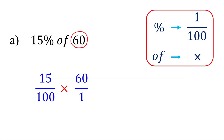60 is the same thing as 60 over 1, because dividing any number by 1 does not change its value. The next step is to multiply these fractions. We could multiply first and then simplify, but it is often easier to simplify before multiplying. Let's do that.